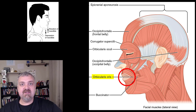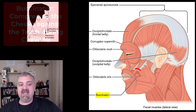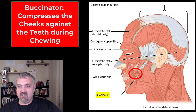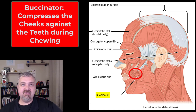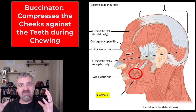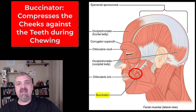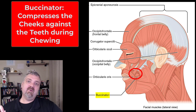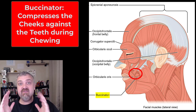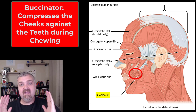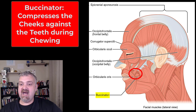The orbicularis oris is the circular muscle around the mouth that compresses the lips. Then we have the buccinator — I've heard it called both buccinator and buccinator. Its job is to compress the cheeks, and the name basically comes from the word for trumpeter. It compresses the cheeks if you're blowing into something, but more importantly, the buccinator compresses the cheeks against the teeth during chewing, making your teeth more effective at doing their job.